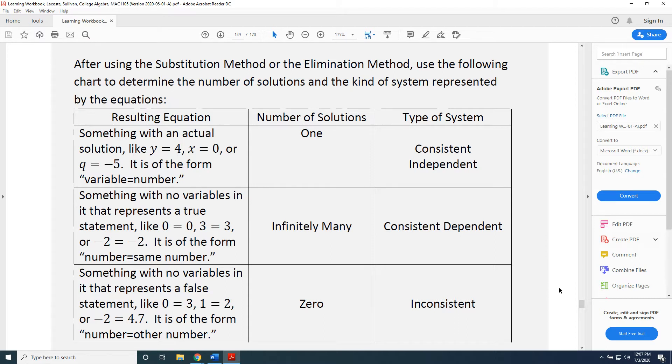Let's look at our second row. Let's say you've completed the substitution or the elimination method, and in so doing, all of your variables have been cancelled or eliminated. That will leave you with something with no variables in it, and that will either represent a true statement or a false statement.